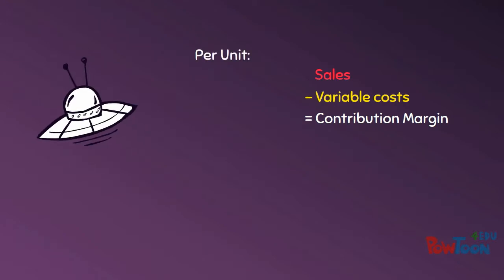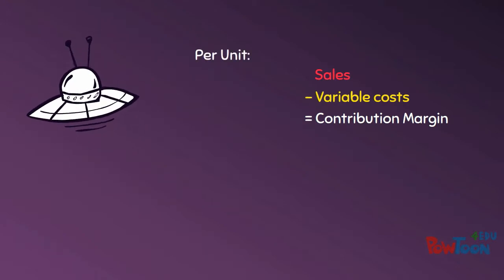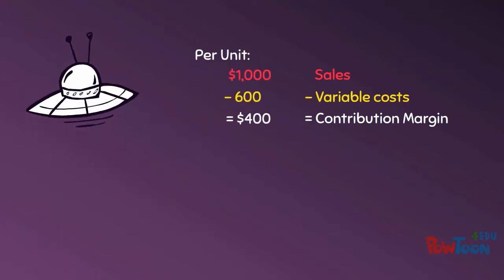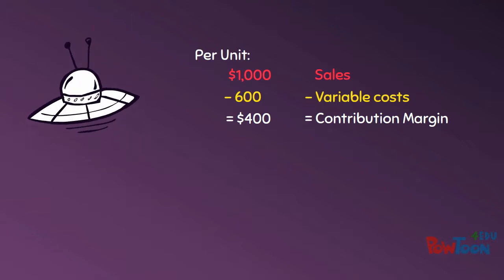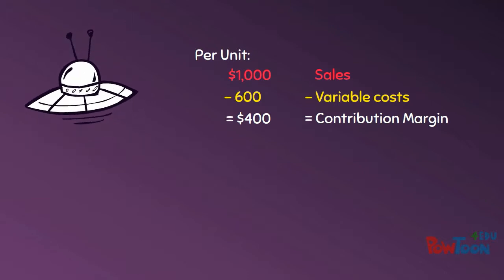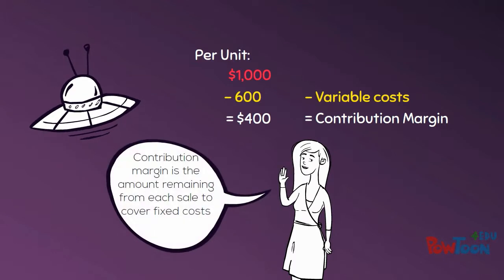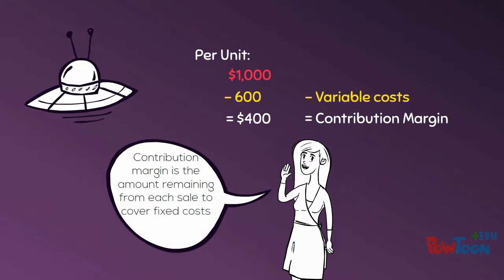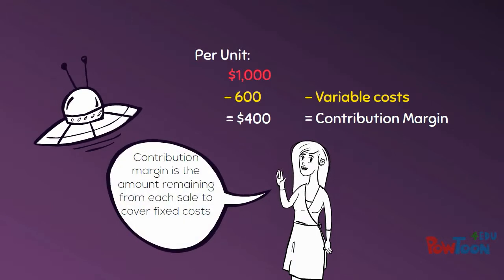We can calculate our contribution margin for each spaceship that we sell. If our sales price is $1,000 and our variable costs are $600, then our contribution margin is $400. Contribution margin is the amount remaining from each sale to cover fixed costs and eventually profit.